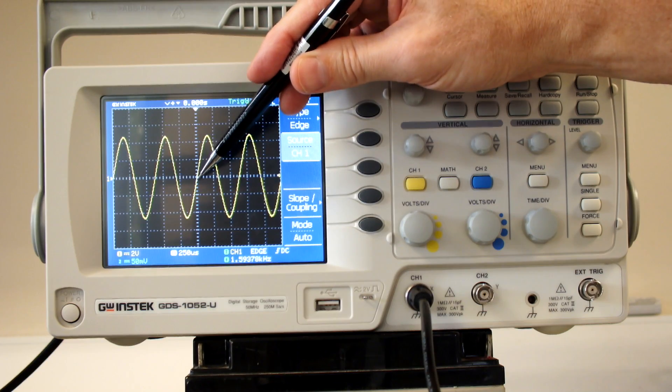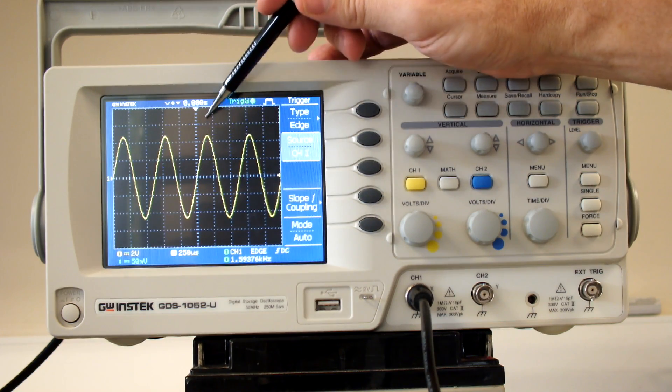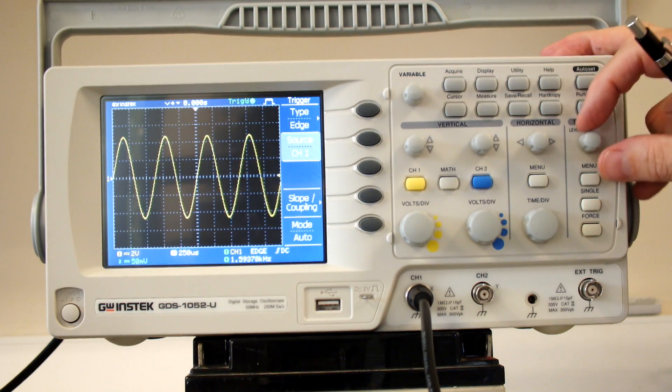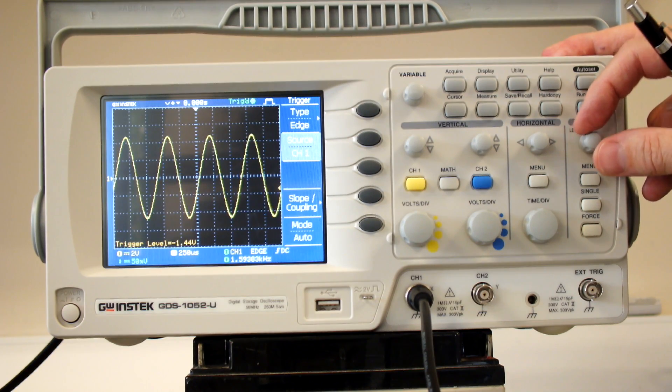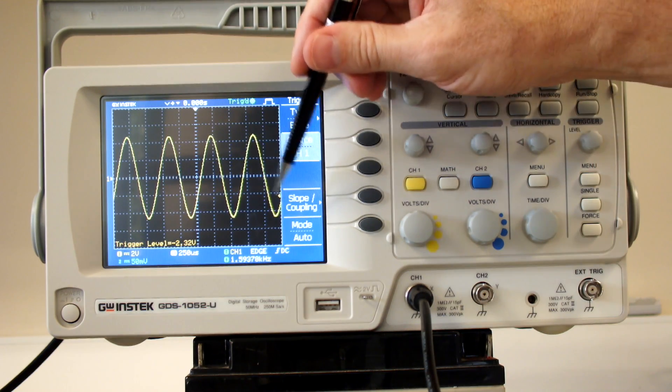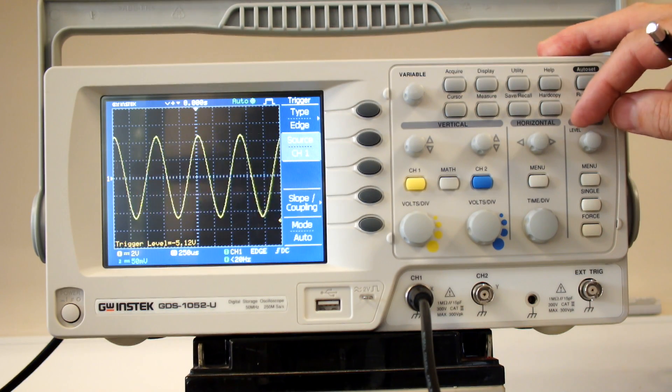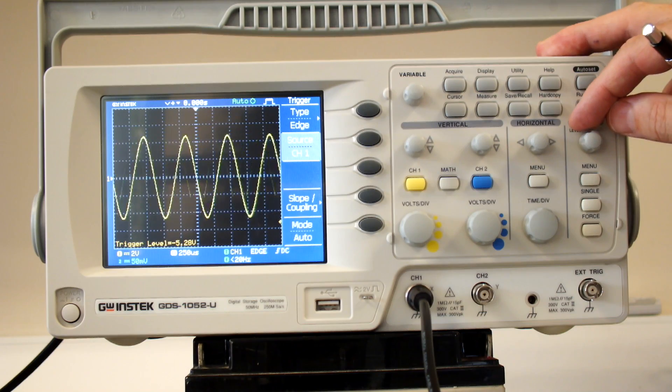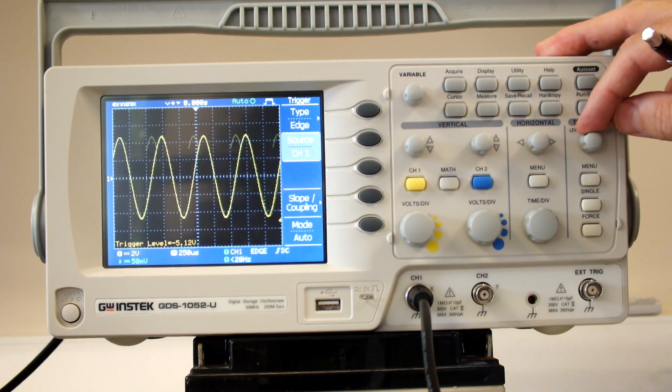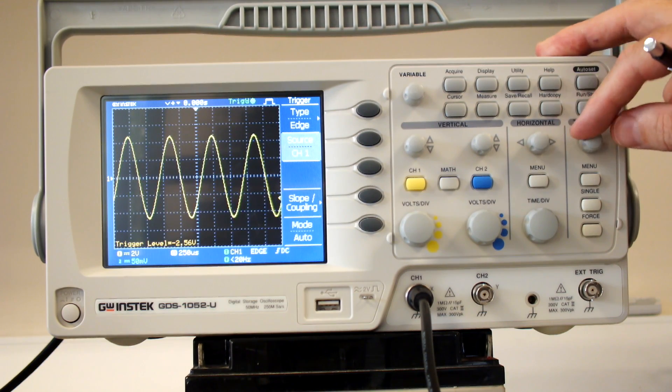I can adjust my threshold point. You can see the threshold here is coming down. It gets further and further. Eventually, if it's below the waveform, I lose my trigger point. So we need to have the trigger point somewhere on the waveform. We're going to adjust it to line things up if that's necessary.